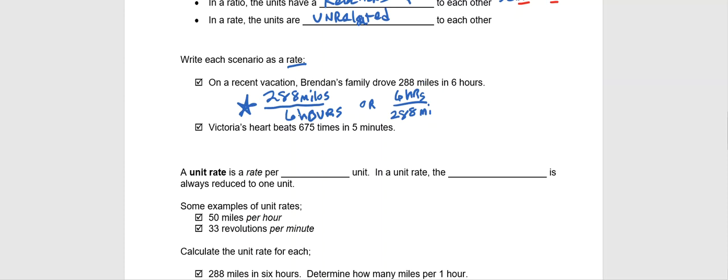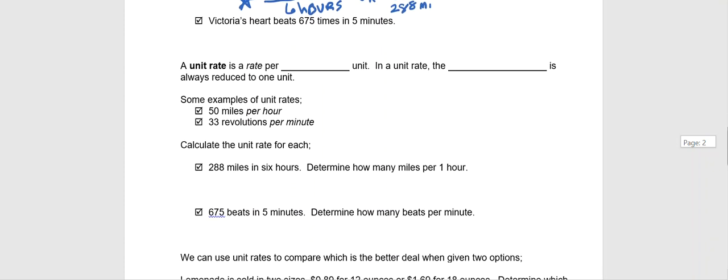So if we do another one, or what I'll ask you to do is to set up for Victoria's heartbeat 675 times or heartbeats in five minutes. I'll leave it to you to write each of those, write the two examples of rates on your own. In one case heartbeats over minutes, in the other case minutes over heartbeats. When we check in in class tomorrow, we'll make sure that you have those right.